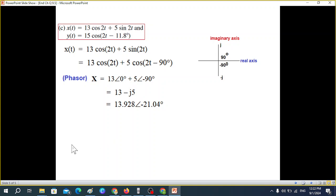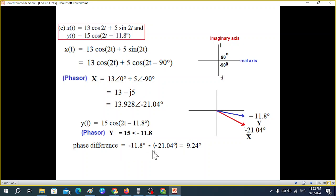So x we have found in phasor form. And now y, we will also write it in phasor form: magnitude and angle, 15∠-11.8°. And then we will plot them. So X is minus 21 and the other one is minus 11. And again going positive this way, we can see that the blue line is ahead. That means blue line is leading. That means Y is leading. And the difference between the two, if you calculate 21.04° minus 11.8°, it will be about 9 degrees. So the difference is 9.24 degrees. And Y is leading. Y leads X by so many degrees.